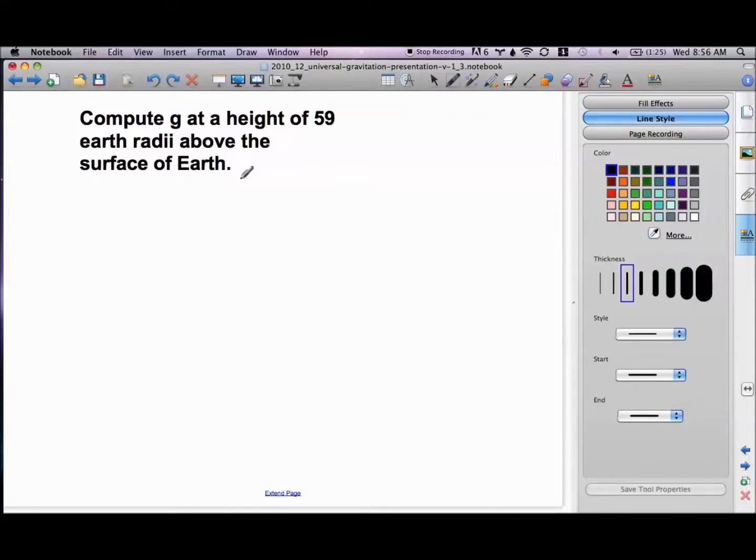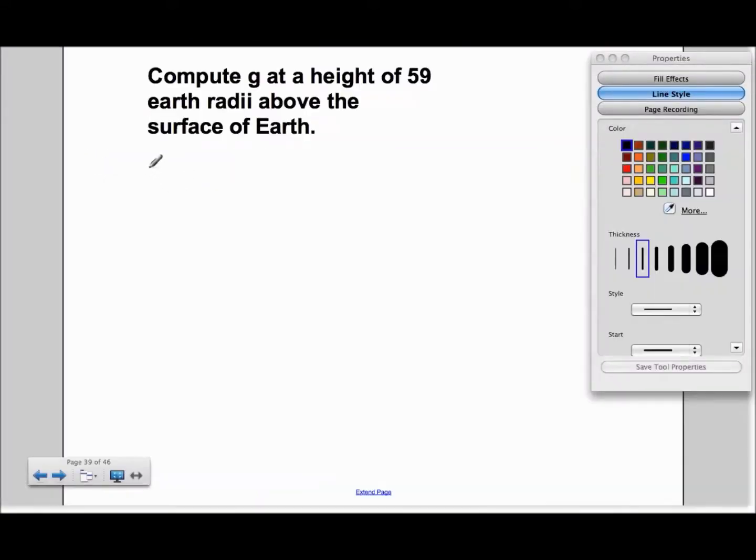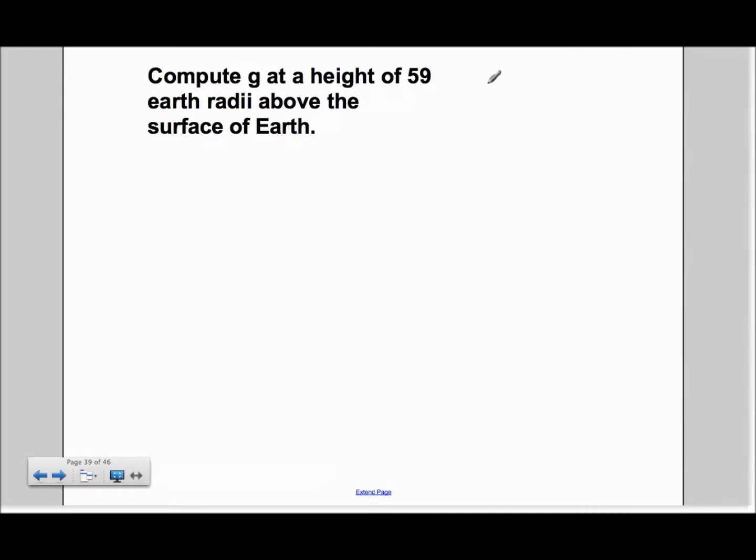In this problem, we're looking to compute g at a height of 59 radii above the surface of the Earth. We know that the height is equal to 59RE.